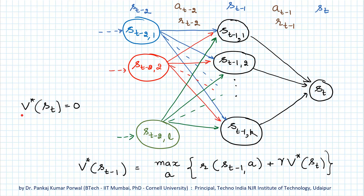Now, using the Bellman equation for the optimal state value, we can find the optimal state value for state s_{t-1} by taking the action a for which the sum of the immediate reward in state s_{t-1} and the present value of the optimal state value of the resulting state is maximized. Note that we knew the optimal state value for state s_t, and to find the optimal state value at state s_{t-1}, we only had to maximize this quantity with respect to action a in state s_{t-1}, without worrying about future or past actions.